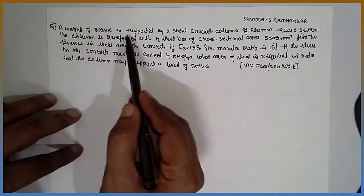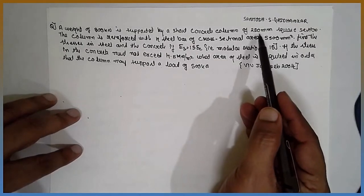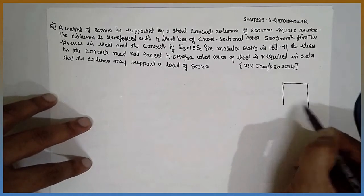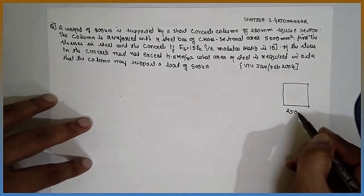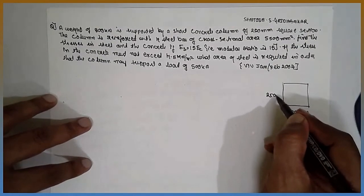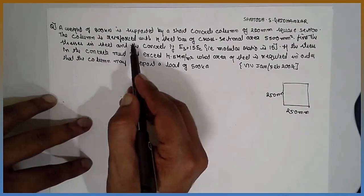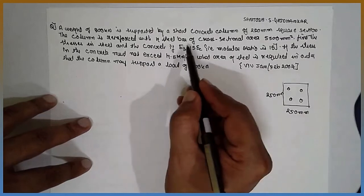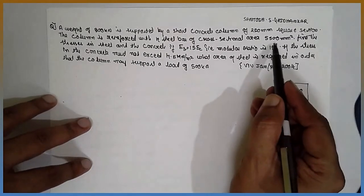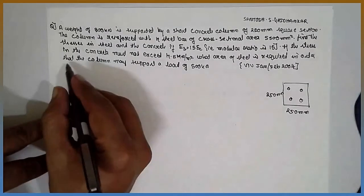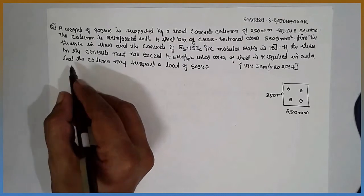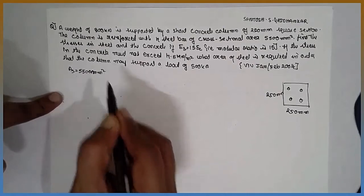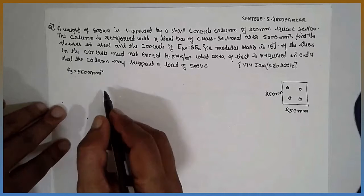A weight of 300 kN is supported by a short concrete column of 250 mm square section — 250 mm by 250 mm. The column is reinforced with 4 steel bars. The cross-sectional area of the steel is given as 55,000 mm².